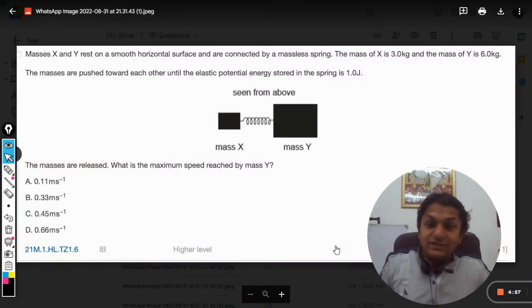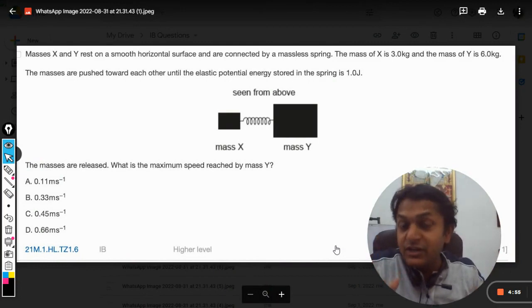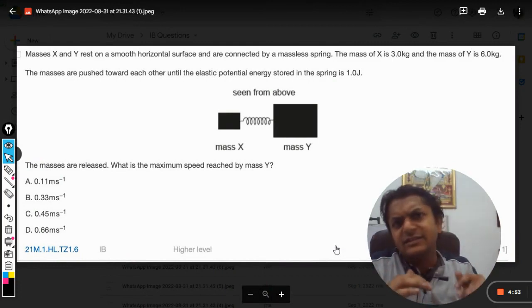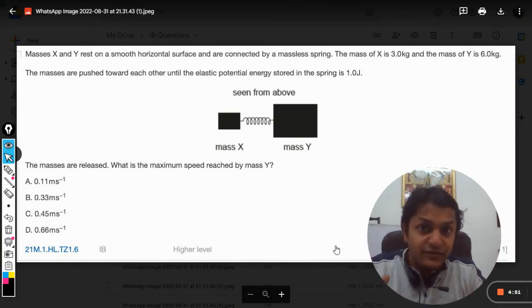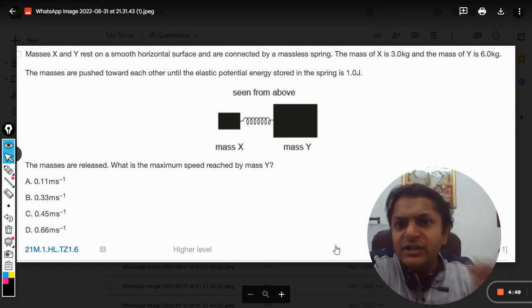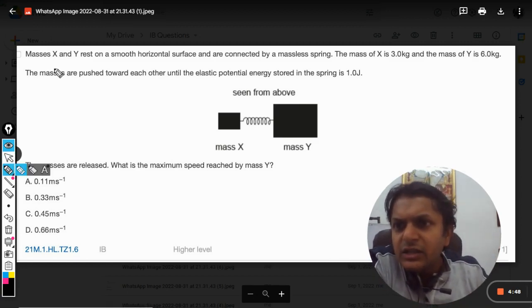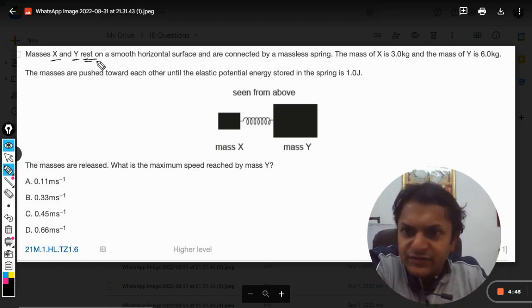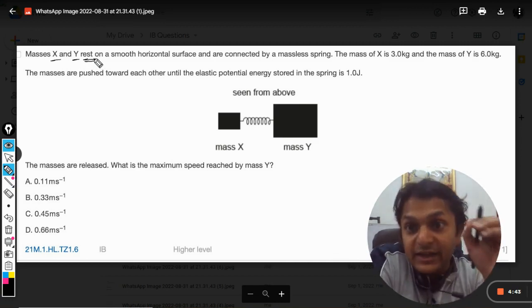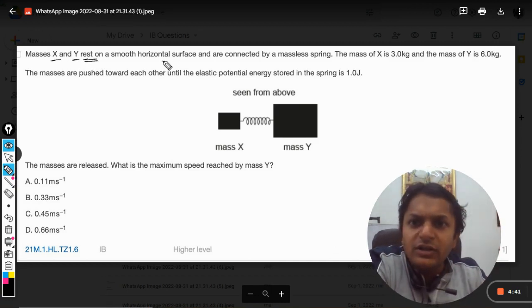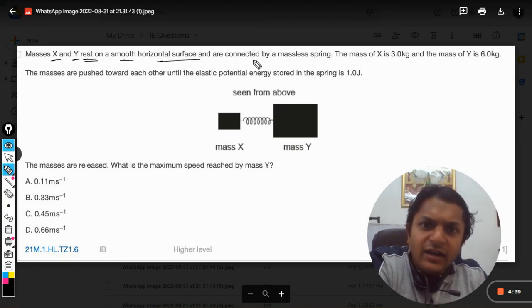Okay dear students, so this is a big question and it's very important. I would say this is a different level of question - it is difficult. Let us see, please concentrate on the statement. Now, the masses X and Y rest on a smooth horizontal surface and are connected by a massless spring.